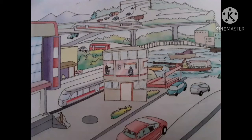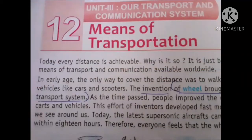Good morning students. Can you see the picture? Here are different kinds of transport like bus, tram, train, plane, auto rickshaw, etc. So today I will teach about chapter 12 of the Euracist book: Means of Transportation.